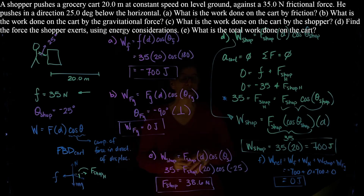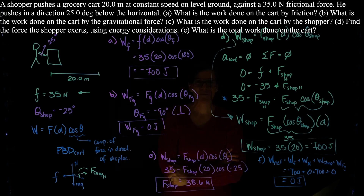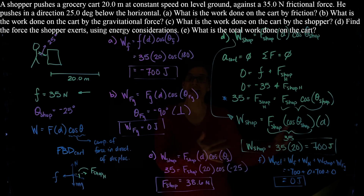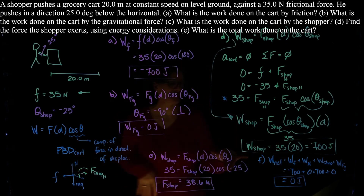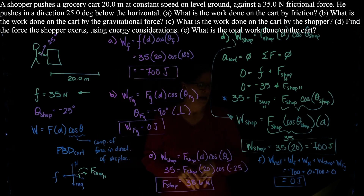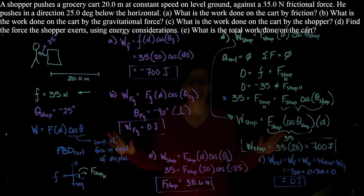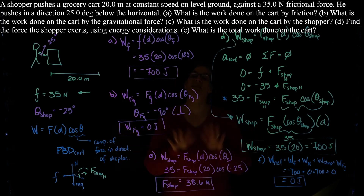If you're familiar with the work-energy theorem, you'd appreciate that the net work had to be zero joules. The work-energy theorem tells us the net change in kinetic energy equals the net work done. We're on a horizontal surface, so potential energy doesn't change. And since the cart moves at constant speed, kinetic energy isn't changing either. With no change in kinetic energy, there's no net work — even though friction and the shopper are individually doing work, they cancel out.